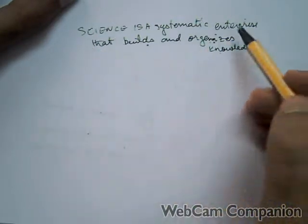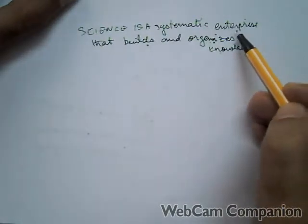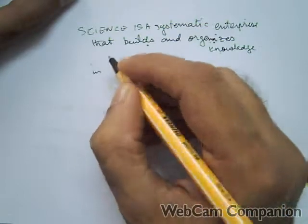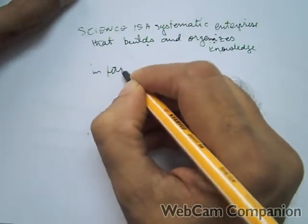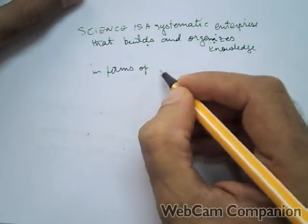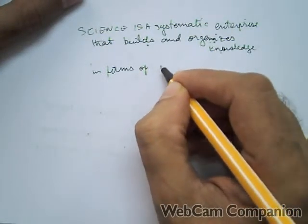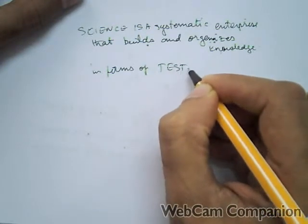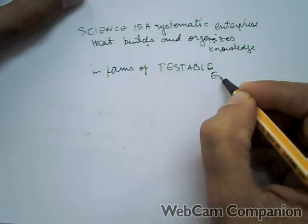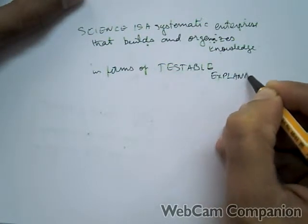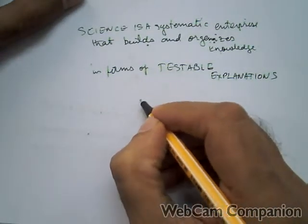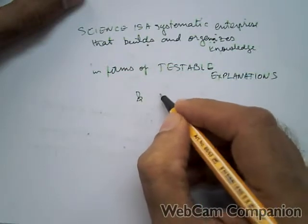But this is not all. Science is a systematic enterprise that builds and organizes knowledge in forms of—here come the big two—testable explanations and predictions. We will spend considerable time discussing both of them.